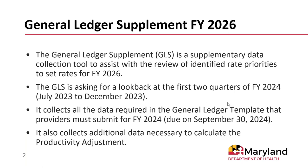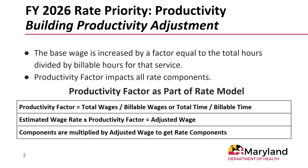It is a data collection tool to help us review some of the identified rate priorities — in this case, the productivity adjustment — for the rates for fiscal year 2026. What it is asking for is data from the first two quarters of fiscal year 2024: your expenses from July 2023 to December 2023. The layout includes all of the material that is in the normal general ledger template, which you all will be required to submit at the end of this fiscal year. So we're looking for that data from the first two quarters, plus some additional data regarding things necessary to calculate the productivity adjustment.